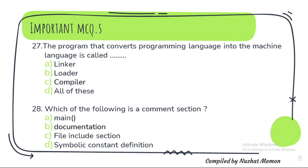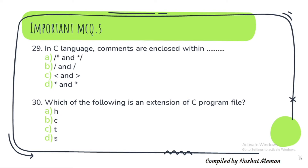Question 27: The program that converts programming language into machine language is called a compiler. Question 28: Which of the following is a comment section documentation? Question 29: In C language, comments are enclosed within slash-asterisk and asterisk-slash — option A is correct.